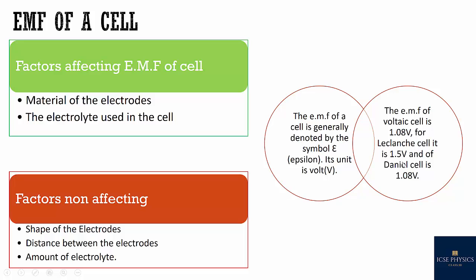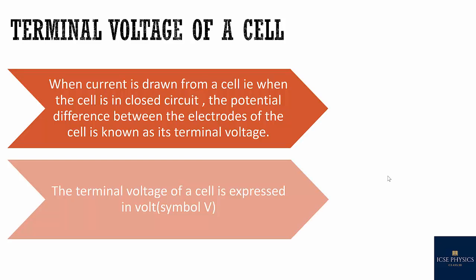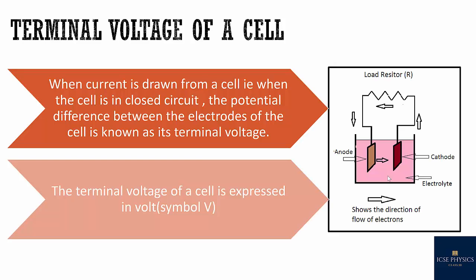What is terminal voltage? When current is drawn from a cell — when the cell is in closed circuit — the potential difference between the electrodes of a cell is known as terminal voltage. It is also expressed in volts. As shown in the figure, the circuit was open earlier; now it is closed, and the potential difference is known as terminal voltage.